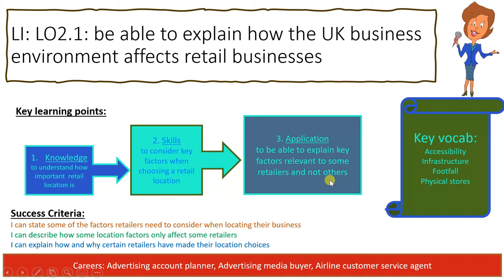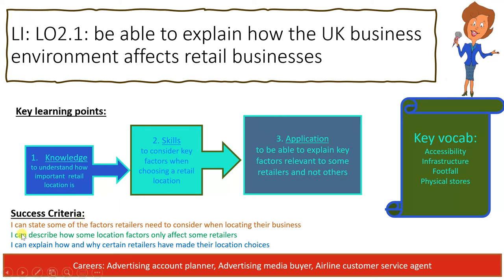The key vocabulary for this lesson: accessibility — we're talking about facilities like ramps and toilets that retailers provide for all customers. Infrastructure — how you get to the retail outlet, whether by train, bus, car park, or main road. Footfall — the number of customers who walk past or through the retail outlet. Physical stores — because we're talking location, we do mean physical stores.